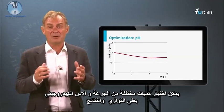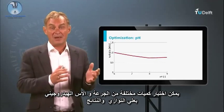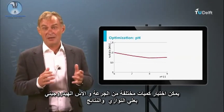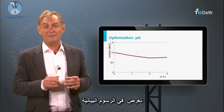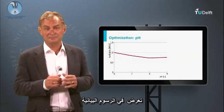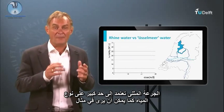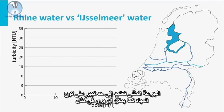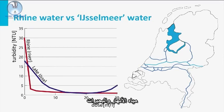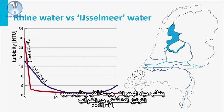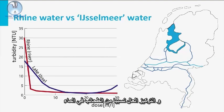The different combinations of dosage and pH can be tested in parallel and the results are presented in graphs. Optimal dosage highly depends on the type of water, as can be seen in the example of river and lake water. Lake water requires much more dosage because of the low concentration of inert material and the relatively high concentration of algae in the water.